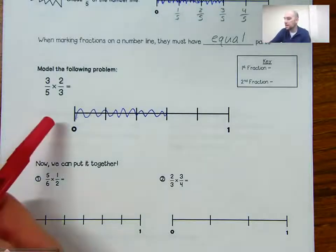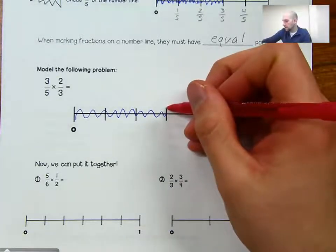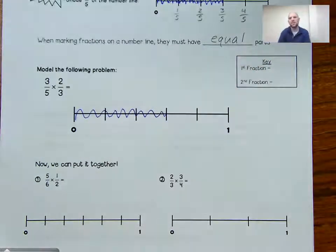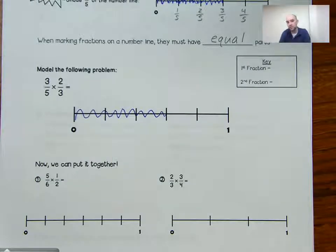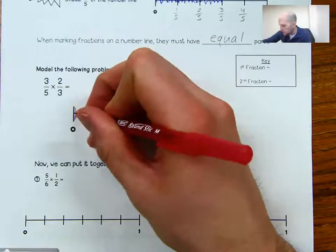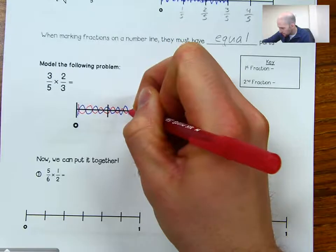Then I need to shade two-thirds of that three-fifths. I'll take my three-fifths and forget that they're fifths for a second — we just have three parts. We need to make two-thirds, meaning we need to shade two-thirds of those three parts. So I'm going to shade two out of those three.